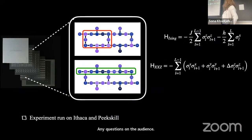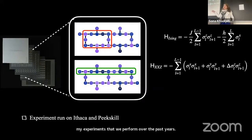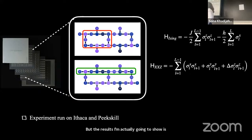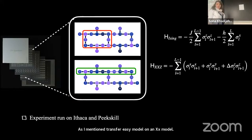We actually did our experiment on multiple different devices, but the results I am going to show were done with specific hardware at fixed scale. We are going to look at the transverse-field Ising model and the XXZ model, both for open boundary conditions with 10 qubits and periodic boundary conditions with 12 qubits.